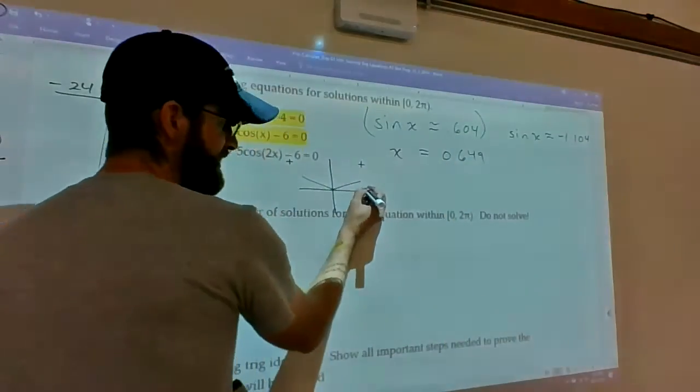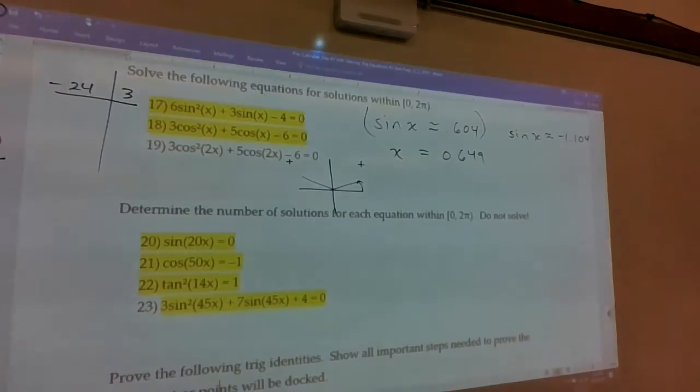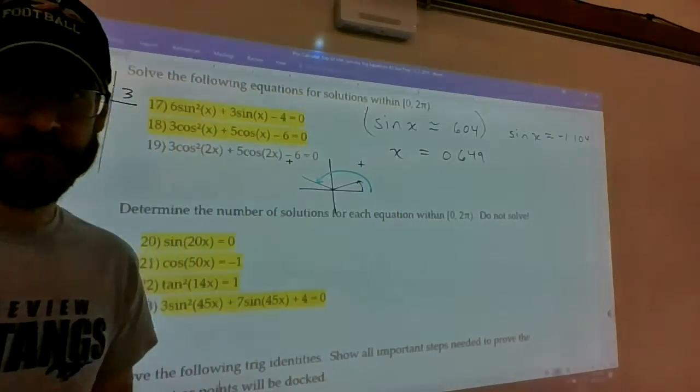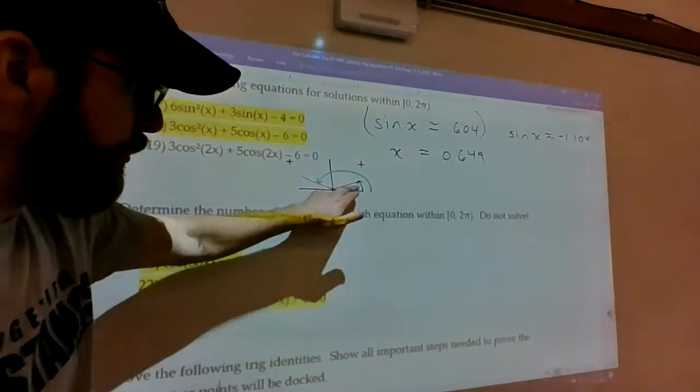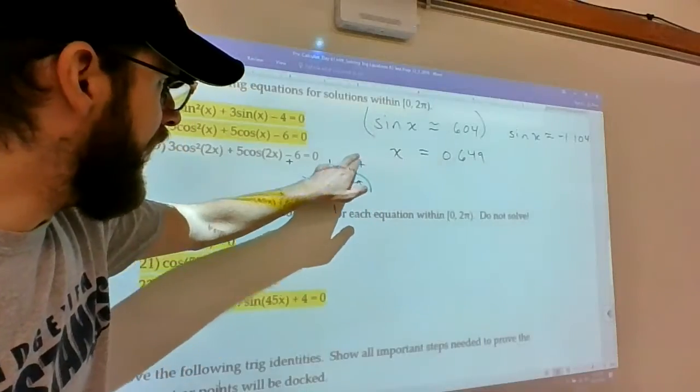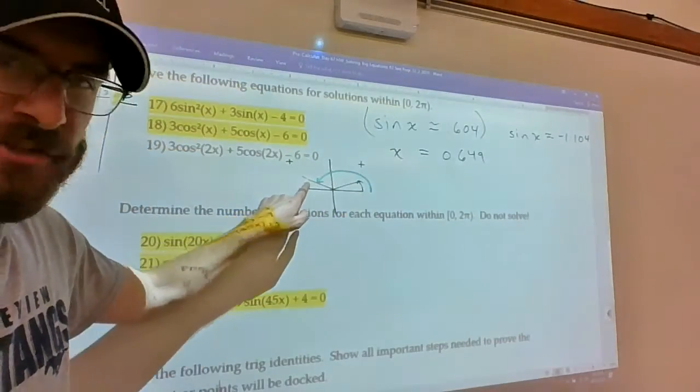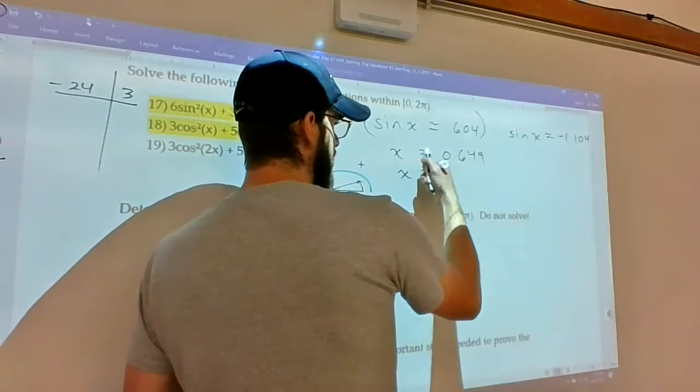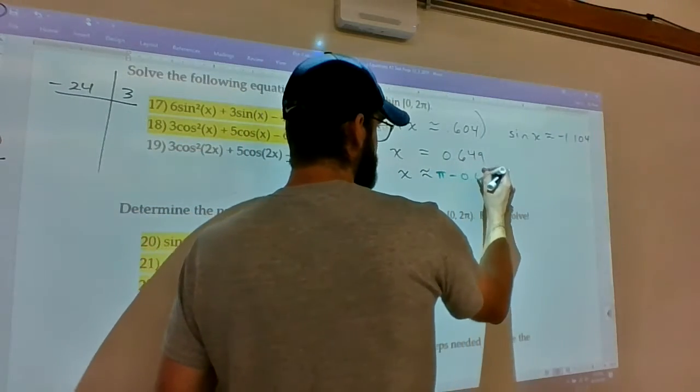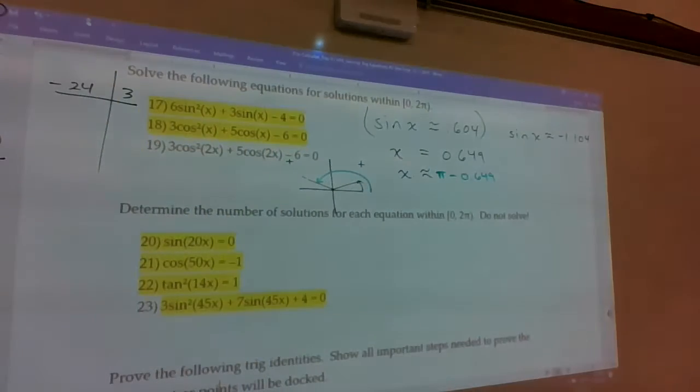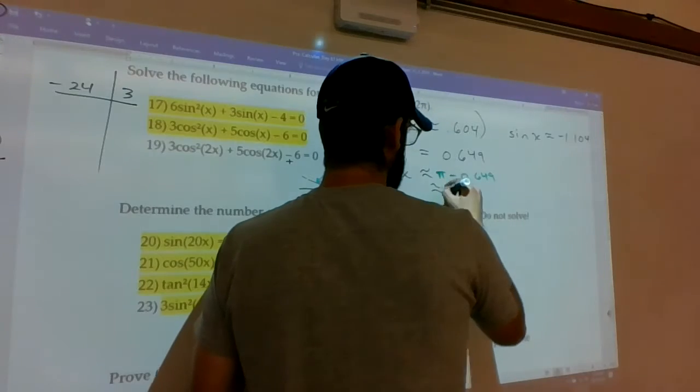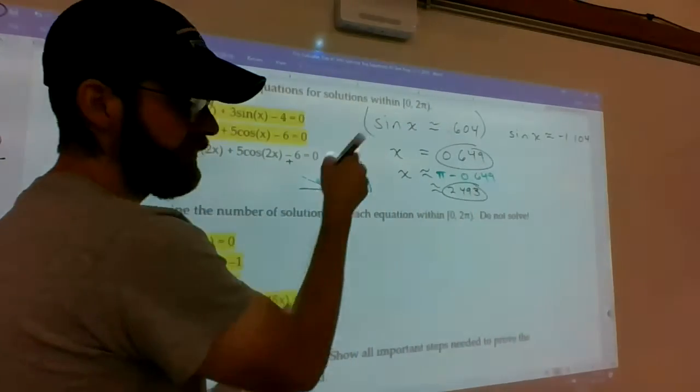Your calculator only computes one of them unfortunately. The 0.649 is this one. Your job is to figure out what this one is. All you have to do is, this is the same reference angle. So it's pi units minus 0.649 radians. So x is equal to this one and approximately pi minus 0.649 radians. 2.493. So these two solutions are paired with our equation.